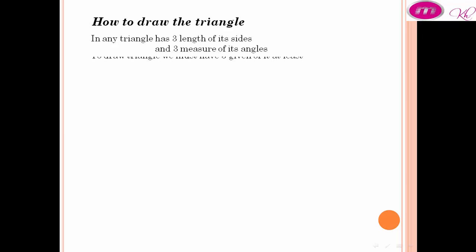Hello, since in primary 4 we complete geometry too. Today we will learn how to draw the triangle. Any triangle has three lengths of its sides and three measures of its angles. To draw a triangle, we must have three given of it at least.